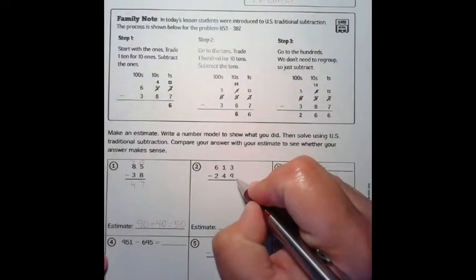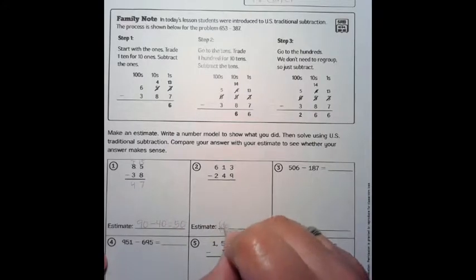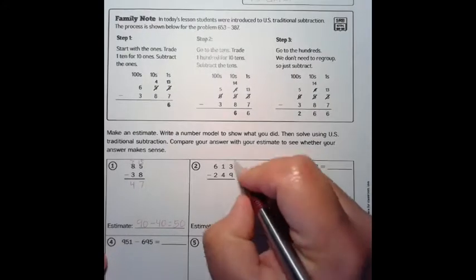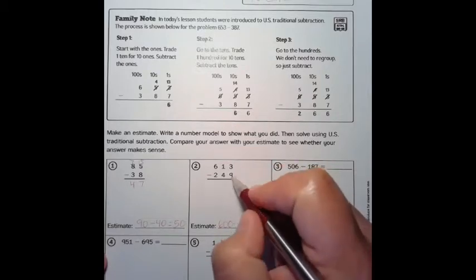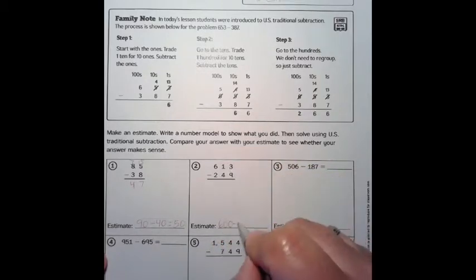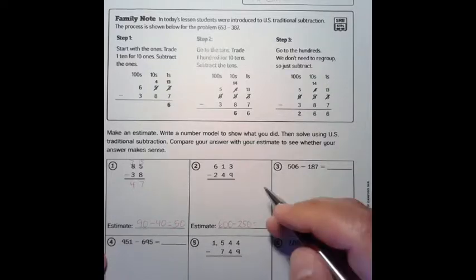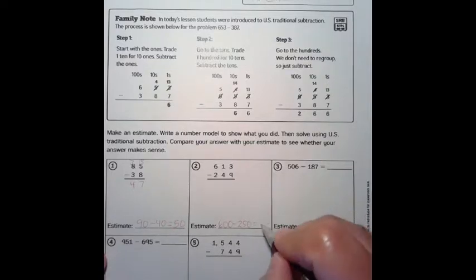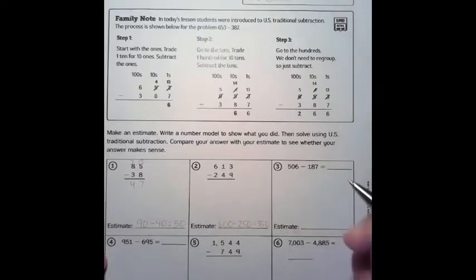Now we're going to do 613 take away 249. We're going to take 613, make it 600, and 249 is real close to 250, so we're going to do that, and our answer for that would be 350. I know that because I can count up from 250 to 600 to get 350.